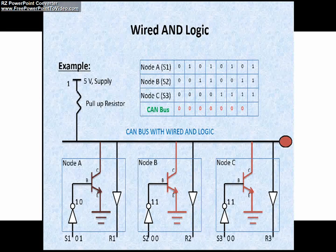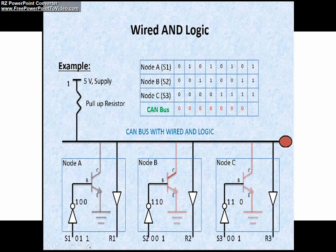But now let's see when all are sending 1, meaning node A, node B, and node C all are sending 1 on S1. You can see in this animation, we are sending 1, so the inverted value will be 0 and there is no switch activation. The value remains the same on the bus, so the output on the CAN bus will be 1.